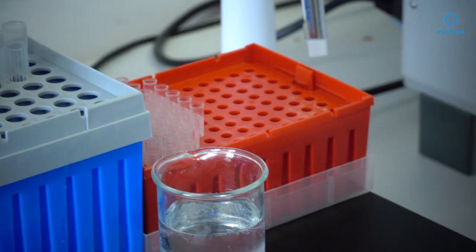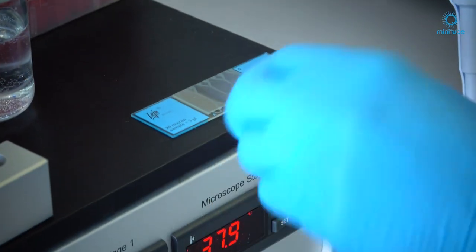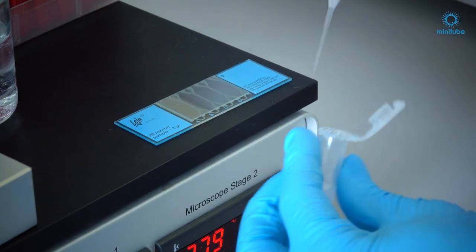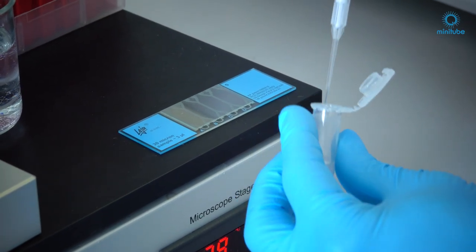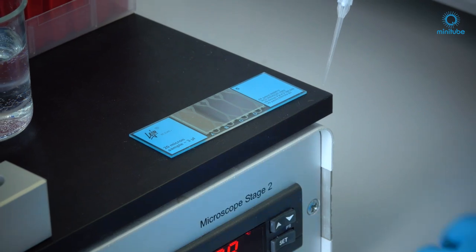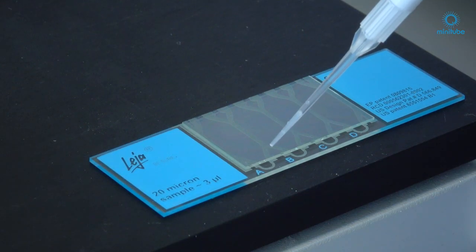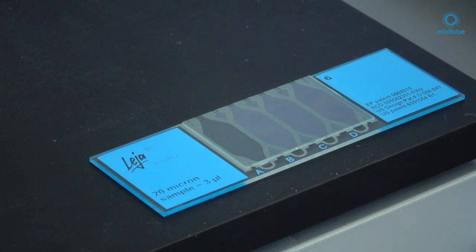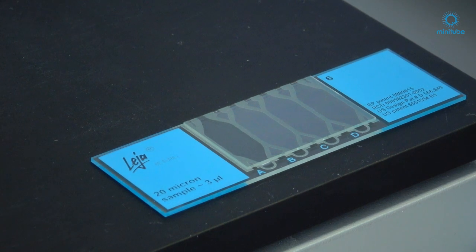Take the tip, mix the prepared sample. Take the 2.7 microliters. To fill the counting chamber, you push the droplet to the front of the tip and fill the chamber in one working step.